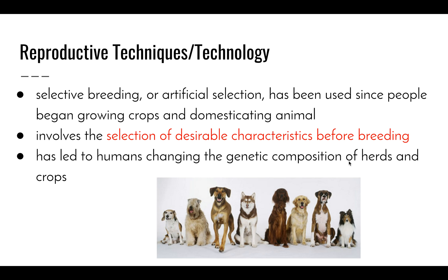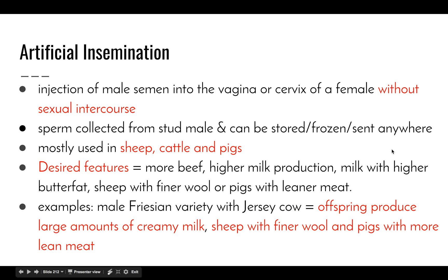We see this all the time with the introduction of new boutique breeds of dogs coming out all the time. Starting off with our first reproductive technique: artificial insemination. This is used in agriculture where male semen is injected into the vagina or cervix of the female without the two organisms actually undergoing sexual intercourse.